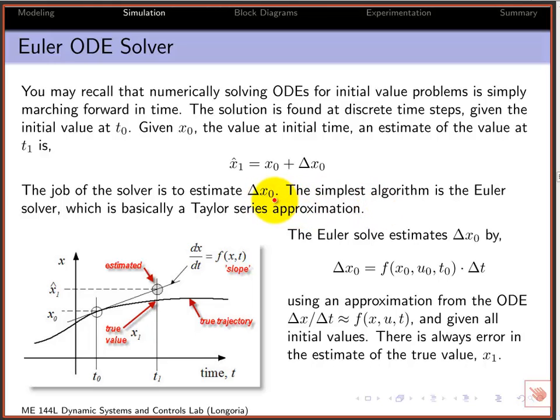The way we find that change in the state is what a solver does, and it estimates this delta x at the initial value. An Euler method is basically a linear approximation or Taylor series approximation about that initial time. So if you know the initial value at some time, you just find an extension using a linear approximation from that dynamic equations that you derive.